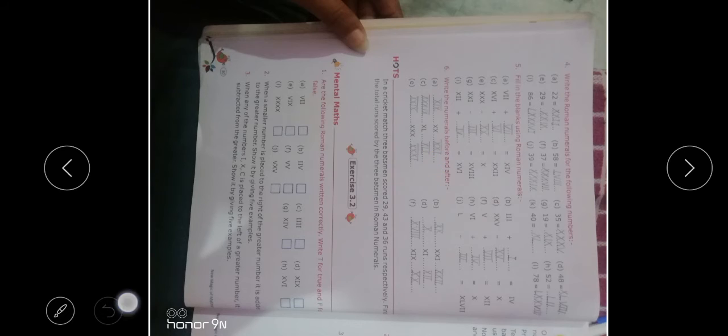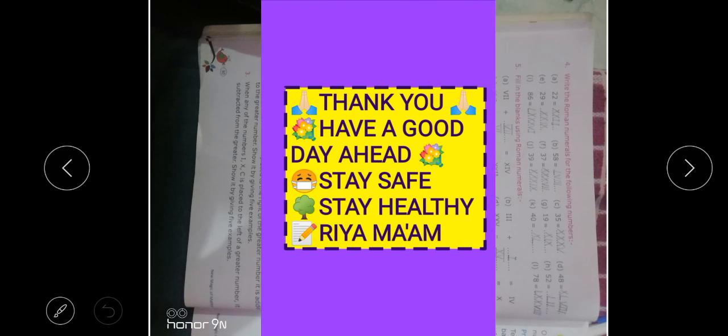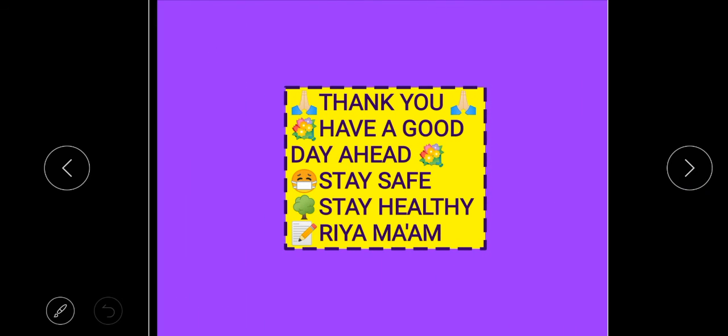So, simple. You should do this question yourself, but the small difference is you have to write and show in Roman numbers. I hope this exercise is clear to you. Do practice. Fill your book with date and day. First of all, you will mention date and day, then you will start your work. Exercise 3.1 you have to do in the book, not in the notebook. Use light pencil while writing your work. Thank you. Have a good day ahead. Stay safe, stay healthy.